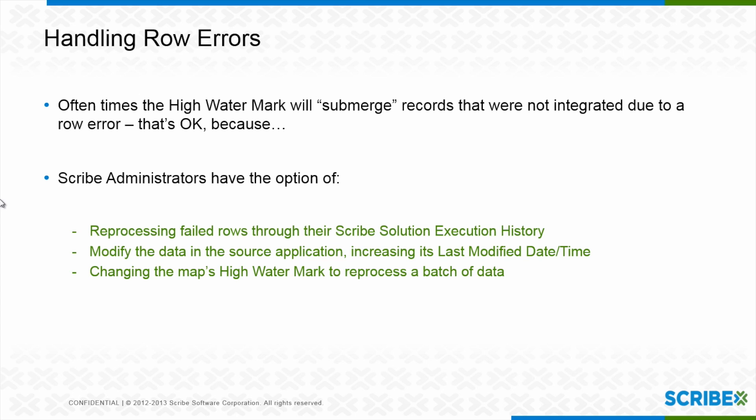This begs the question: what would somebody do to go back and process that third failed row? There are three options. First, you could reprocess that failed row — Scribe keeps the data so you can make changes to your mapping and reprocess it. Second, you could go to that application and just make a change to it — probably the simplest way. And third, you can actually change that high-watermark, what Scribe is remembering.